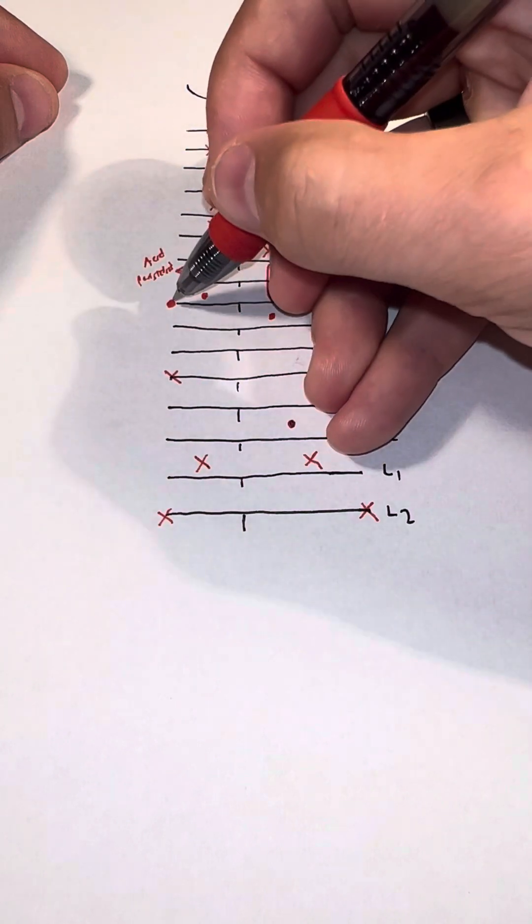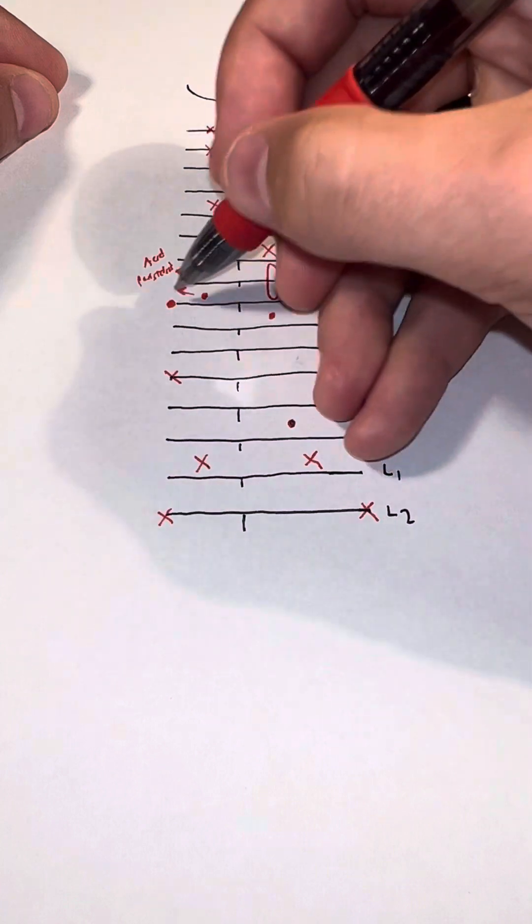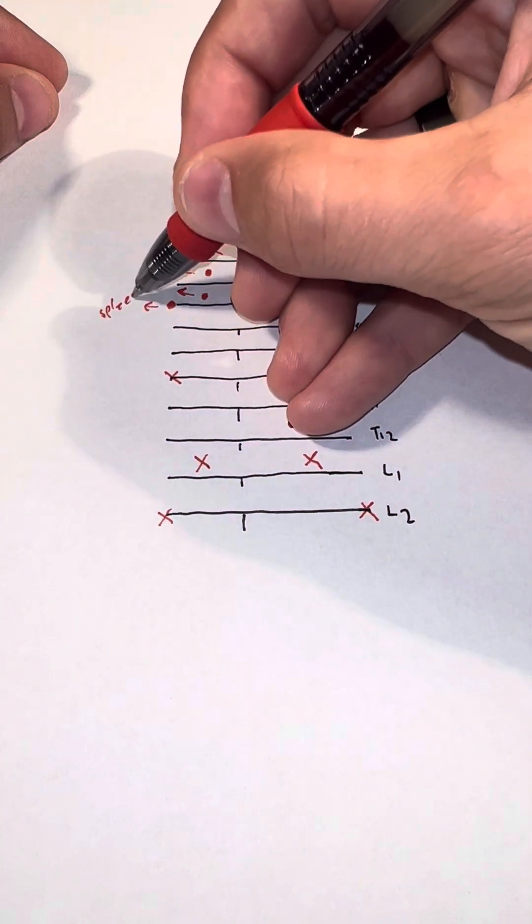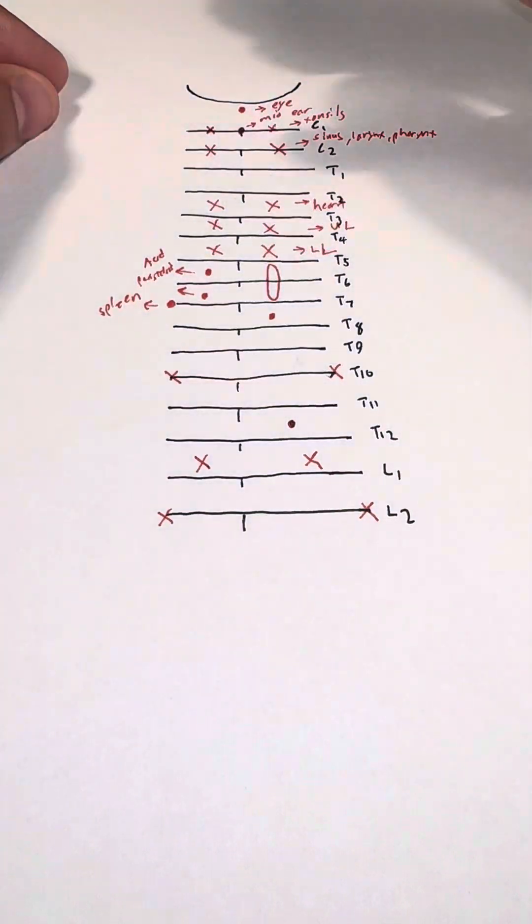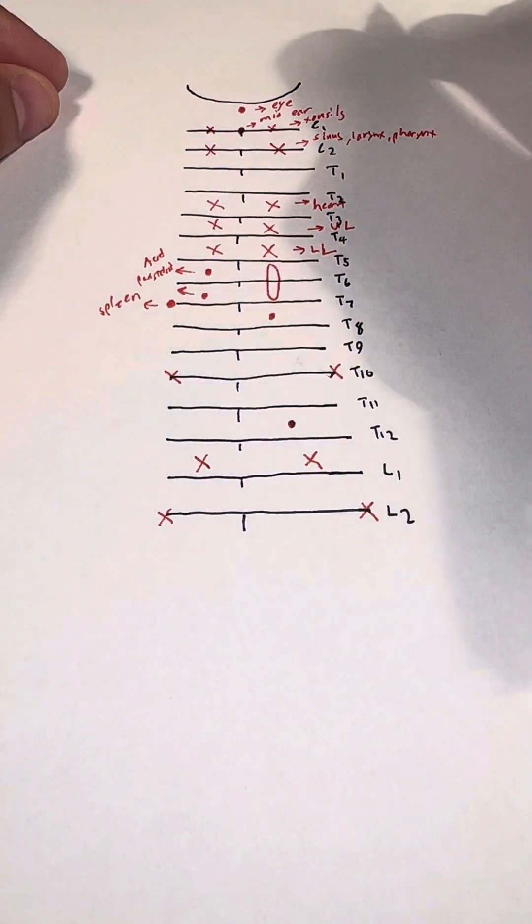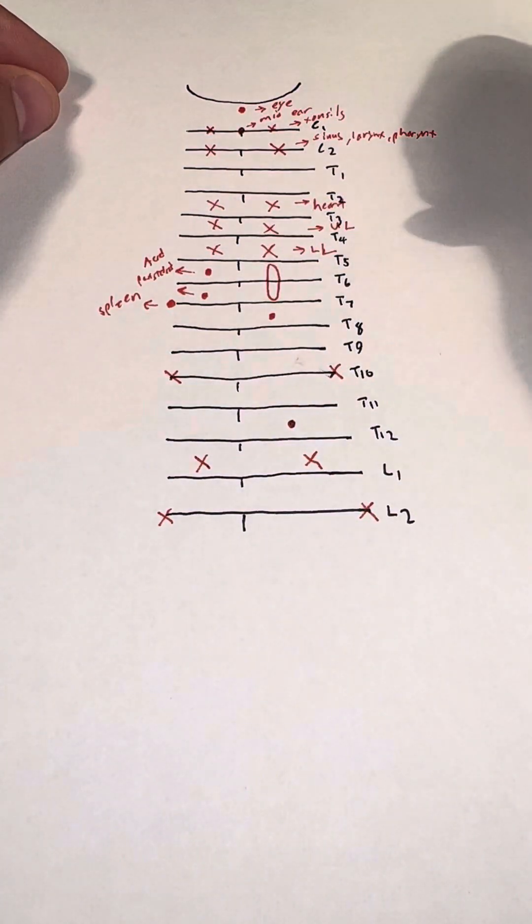Right here on T7, this is the spleen. You'll see as we go through this, there's a lot of similarities to the format of other viscerosomatics, Chapman's points, and things like that.